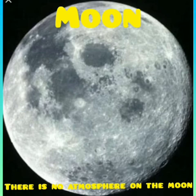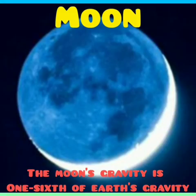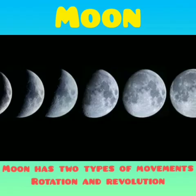There is no atmosphere on the Moon. The average distance between the Moon and the Earth is about 384,400 km. The Moon's gravity is one-sixth of Earth's gravity.